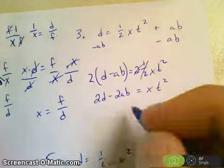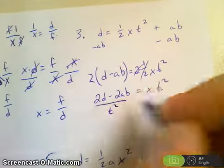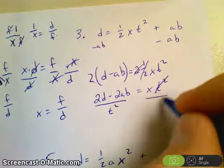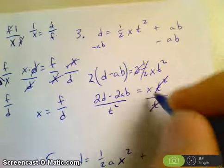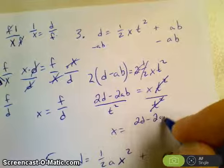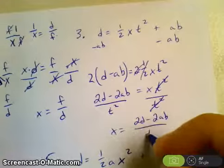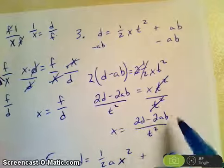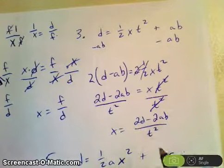Final thing is to divide by t squared. So again, I'm taking and dividing by t squared. They cancel. So now x is equal to 2d minus 2ab all over t squared. And you can factor out the 2 and leave it as 2 times the quantity d minus ab. But either way is fine.